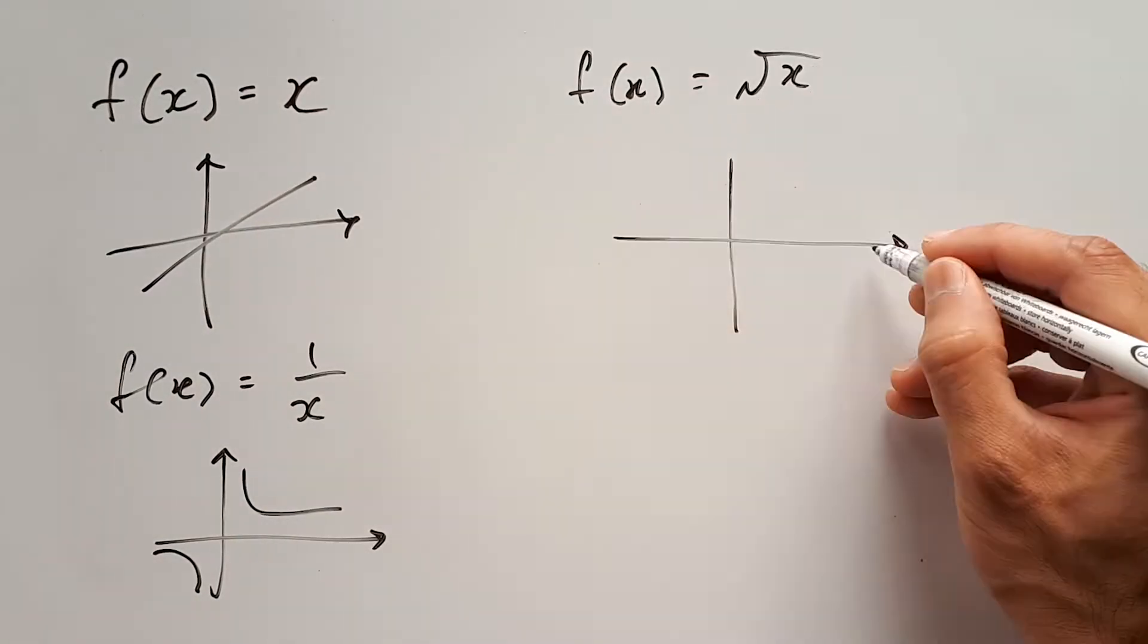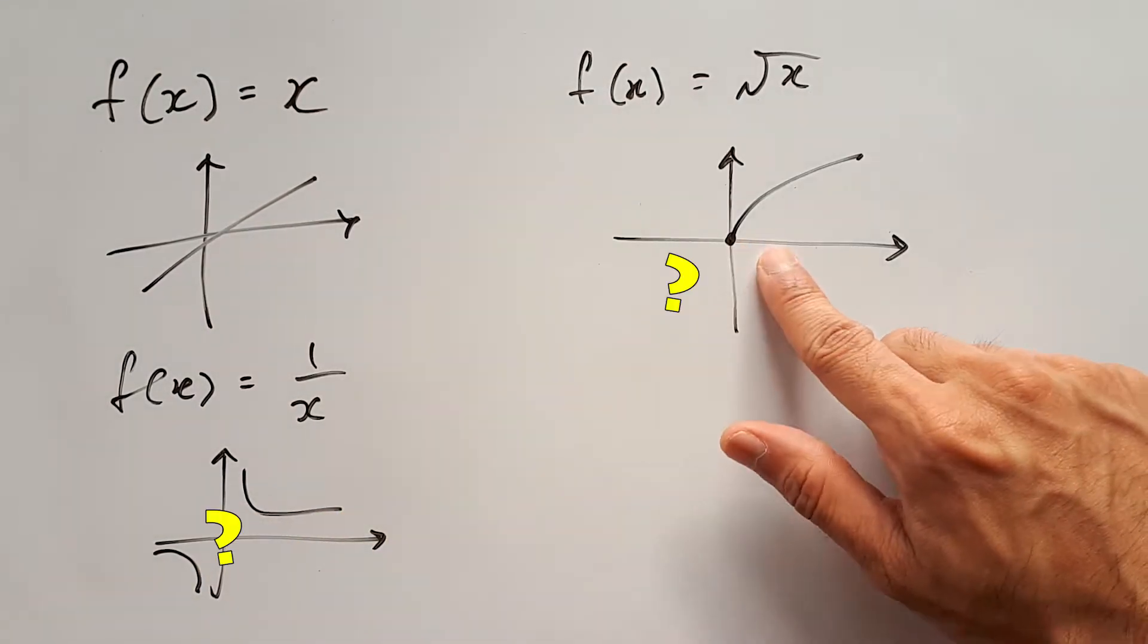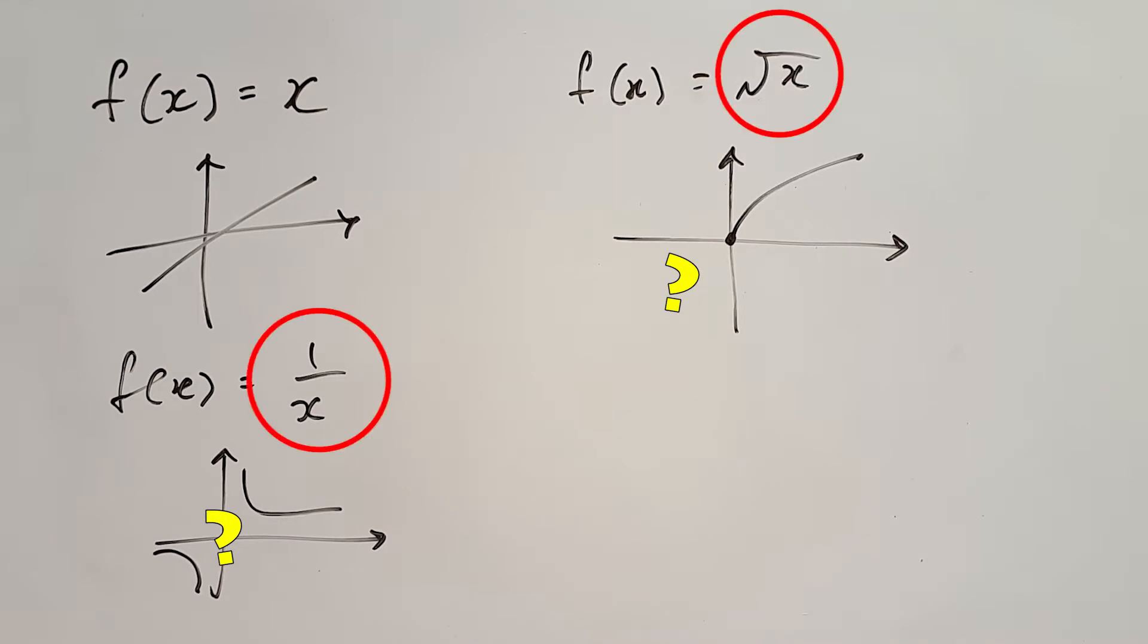Functions produce graphs in many different forms. For example, these two are missing certain segments. This is because their rules are restricted by certain mathematical limitations.